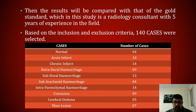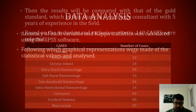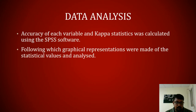Out of 140 cases, 64 were normal cases. We had 10 cases of acute infarct, 14 cases of chronic infarct, 9 cases of EDH, 13 cases of SDH, 4 cases of SAH, 14 cases of intraparenchymal hemorrhage, 9 cases of contusions, 5 cases of cerebral edema, and 7 cases of mass lesion. For data analysis, the accuracy of each variable and kappa statistics were calculated using SPSS software, following which graphical representations were made of the statistical values and analyzed.